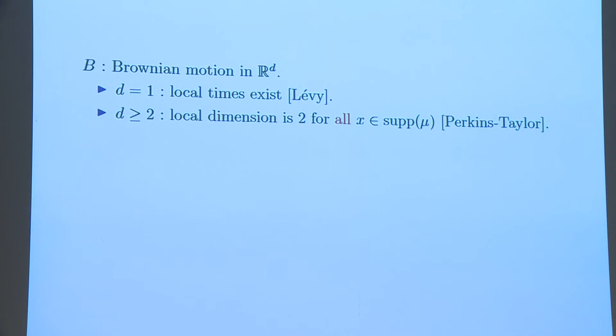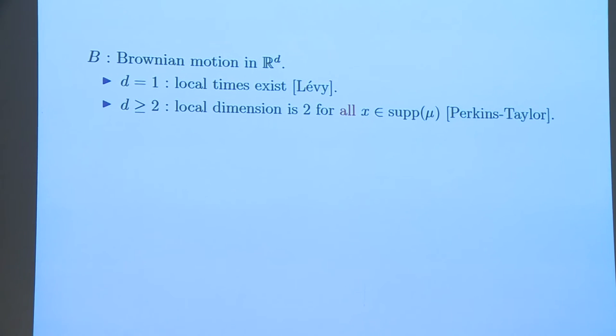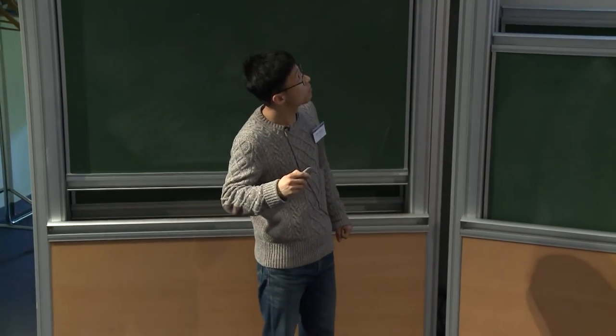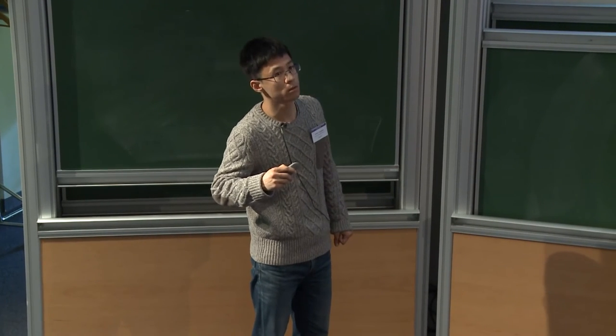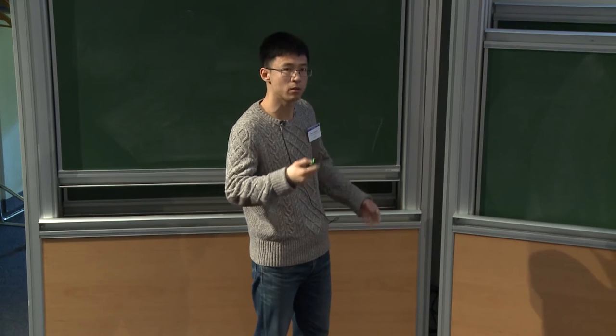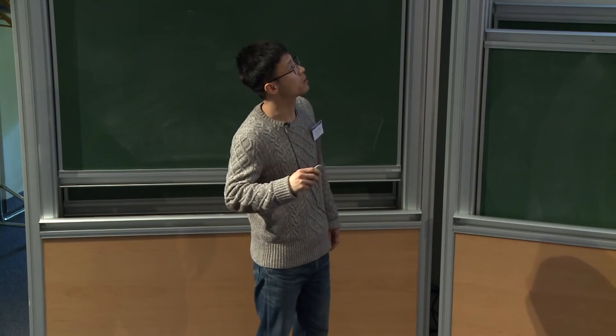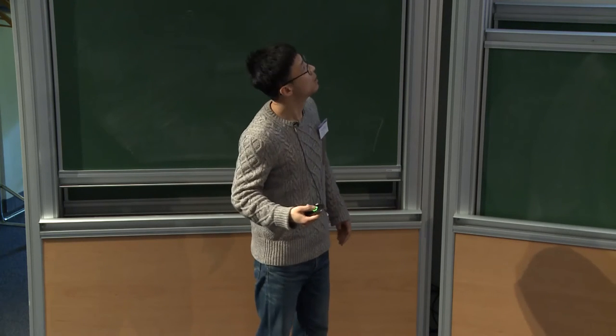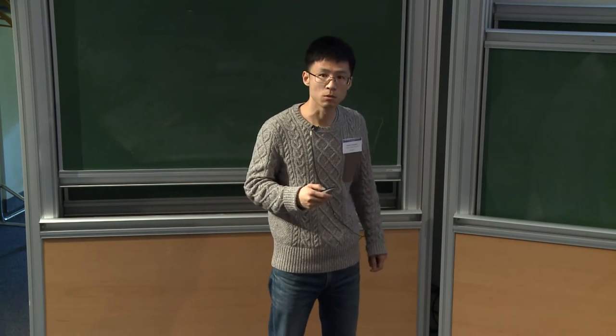I will give some examples. The first example, the most interesting example is Brownian motion. It's been studied for a while. Levy considered the local time, the existence of local times, and in dimension one, it does exist. And in higher dimensions, Brownian motion does not have local times, and we consider local dimensions. Perkins and Taylor have proved that for all the points in the support of this measure, Brownian motion has local dimension two.